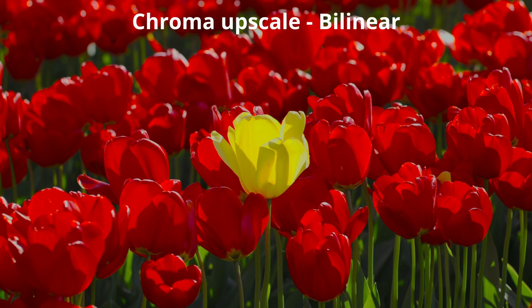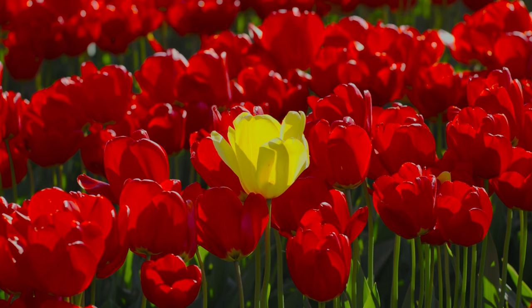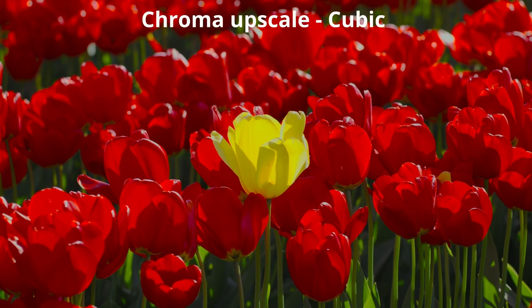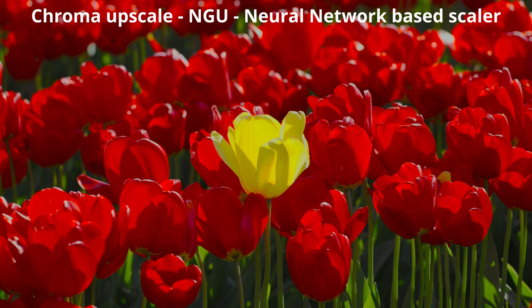Now turning on the bilinear algorithm, the image becomes nice without visible defects, but in fact this algorithm blurs the image and creates blurred edges. Switching to cubic gives slightly clearer but torn edges. Turning on NGU mode — the most powerful algorithm — the edges are nice and smooth.